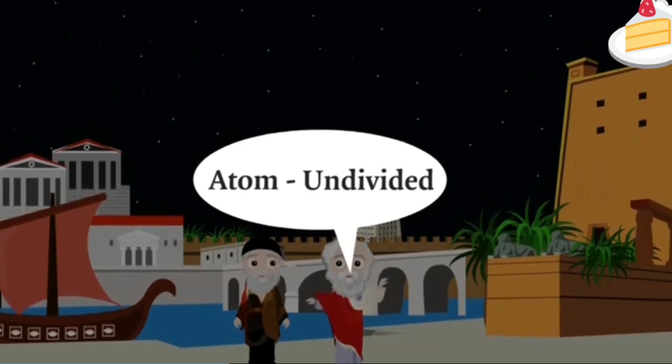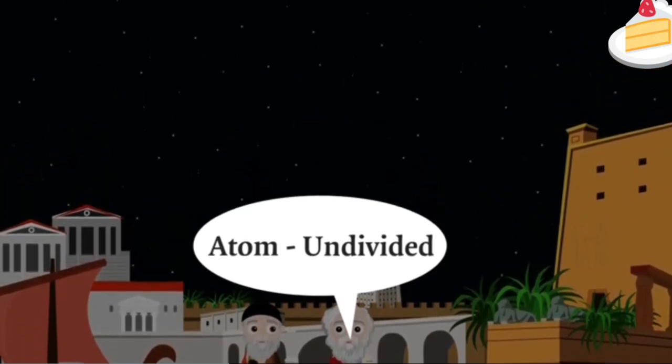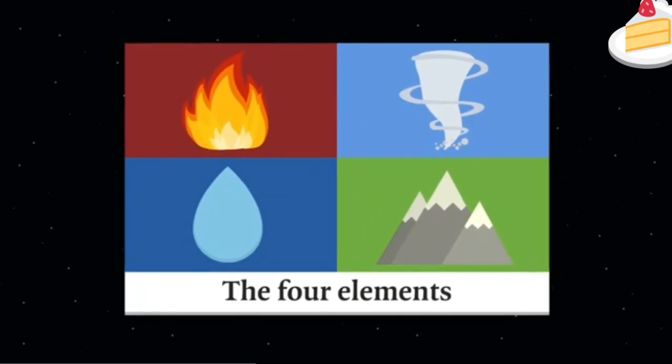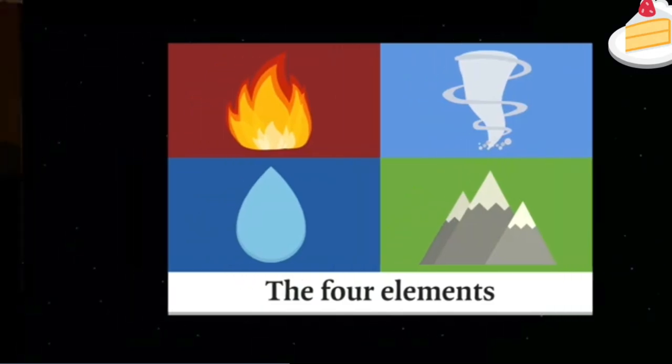But this idea that everything is made up of tiny atoms was not a particularly popular one. Aristotle believed that there were four types of matter, that everything was made from four elements, earth, air, fire, and water. This idea of four elements had already been around for a long time, and similar ideas existed in many other of the early civilizations.